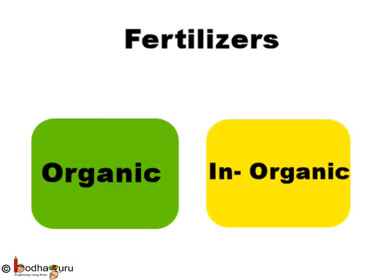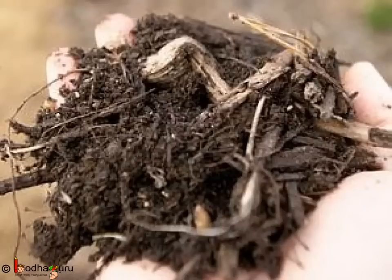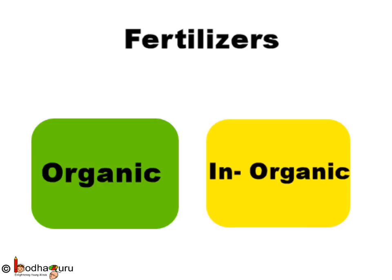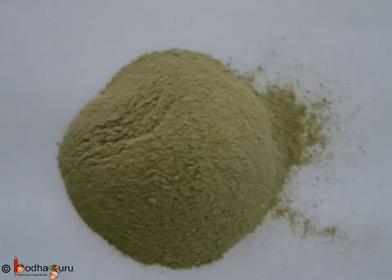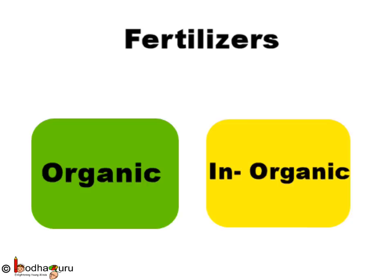Fertilizers are of two types: organic, obtained from cow dung or dead organisms; and chemical, made in factories, like urea, nitrates, and phosphates.